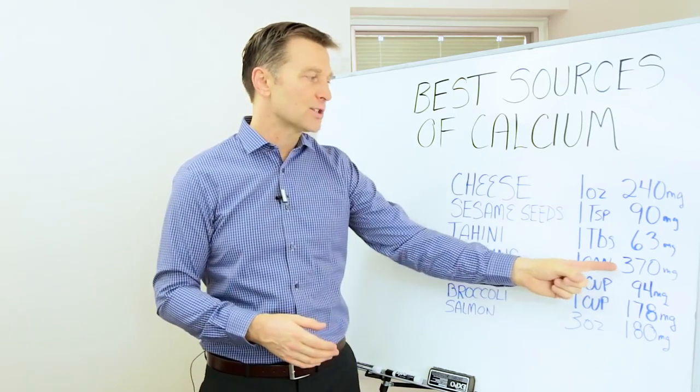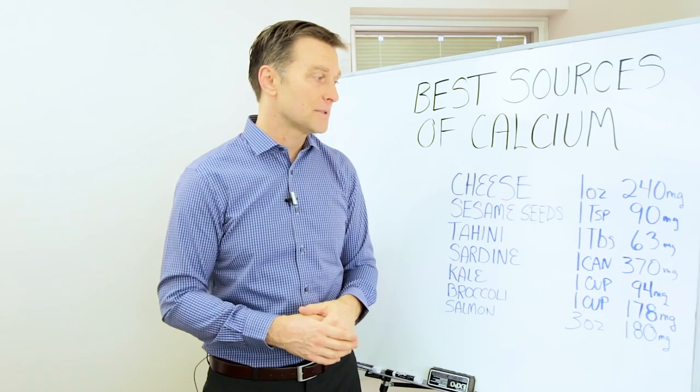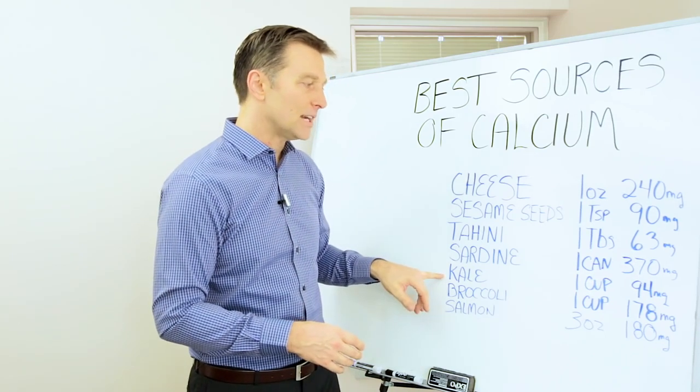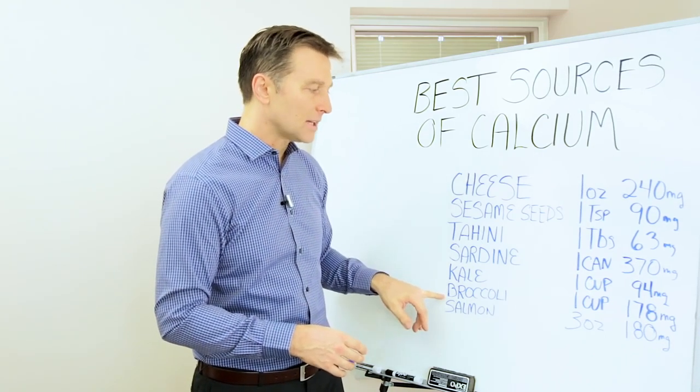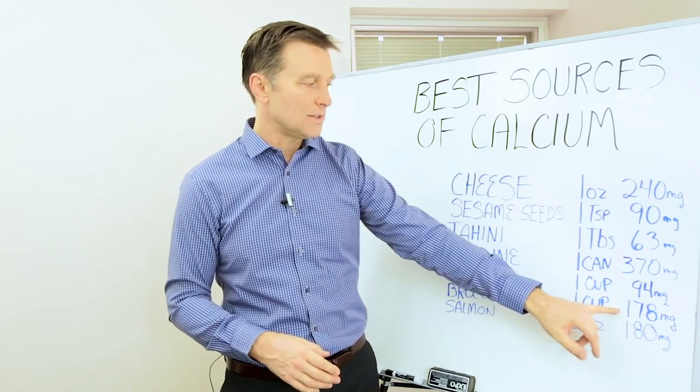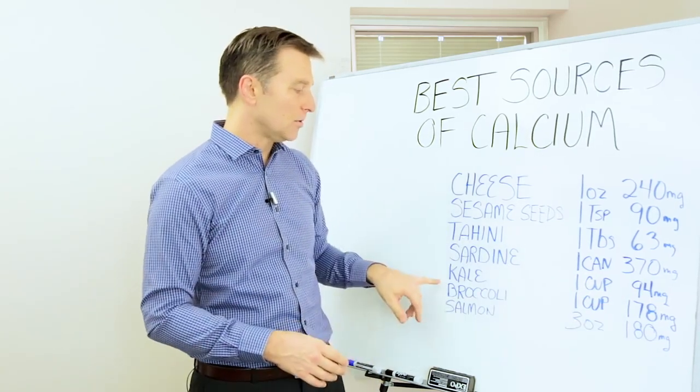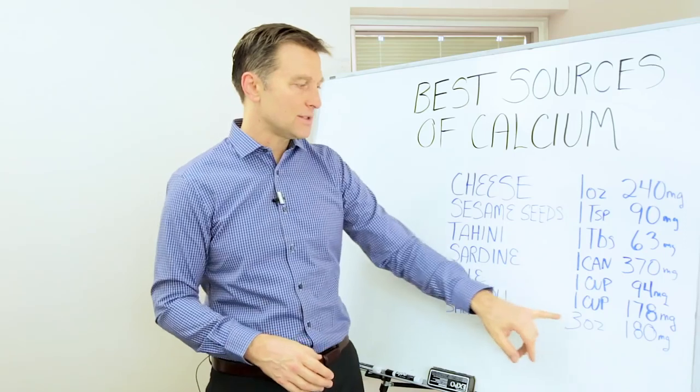Sardines, one can is 370 milligrams. And then we got kale, 94 per cup. Broccoli, one cup is 178. Pretty good. Look, it's double kale. Salmon, three ounces is 180.